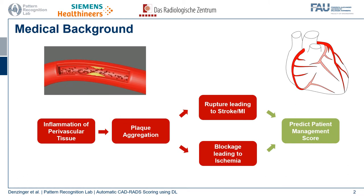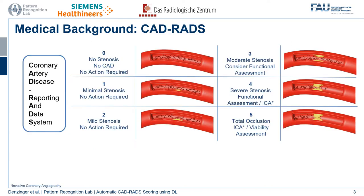This work tries to help with this problem by automatically predicting patient management scores based on coronary CT angiography scans in order to ease the clinical workflow. The patient management score we focus on is the CAD-RADS score, which stands for Coronary Artery Disease Reporting and Data System. It is mostly defined as the most severe stenosis within the patient's coronary artery tree; however, the final score is still given by a clinician, which also reflects a qualitative component — especially for the differentiation of CAD-RADS zero and one, since small wall irregularities are already classified as minimal stenosis.